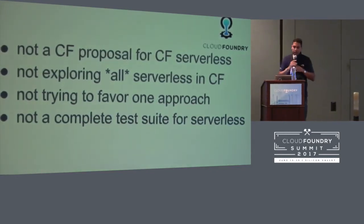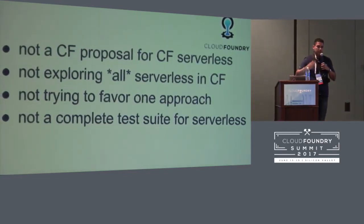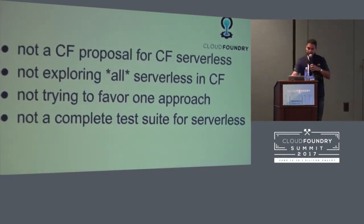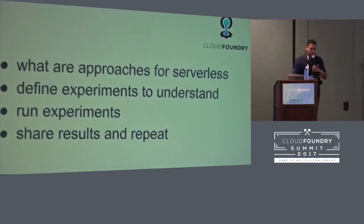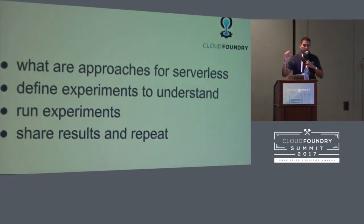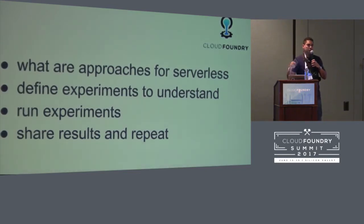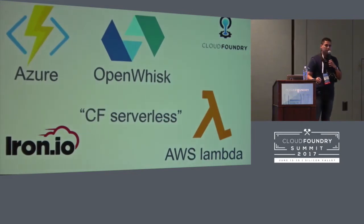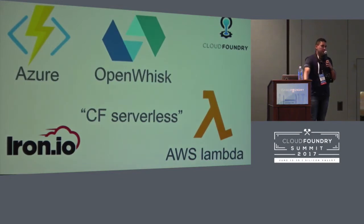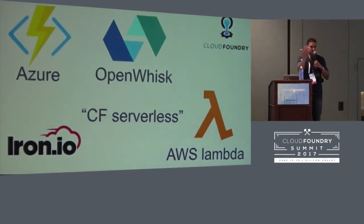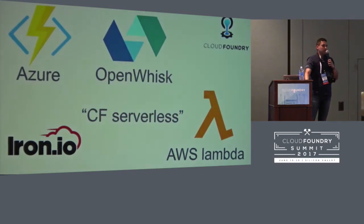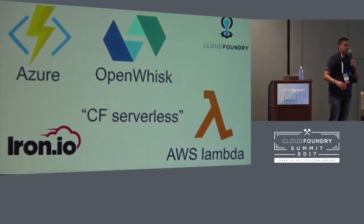We're trying to give you a way for you to make your own decisions. And because we look at it as a set of test suites, it's not a complete test suite. We are defining experiments, running the experiments, and sharing the results — rinse and repeat. The platforms we targeted: Azure now has functions, OpenWhisk is IBM's solution, Iron.io has an open source version, and of course many of you know about AWS Lambda, which is one of the pioneering works around serverless.